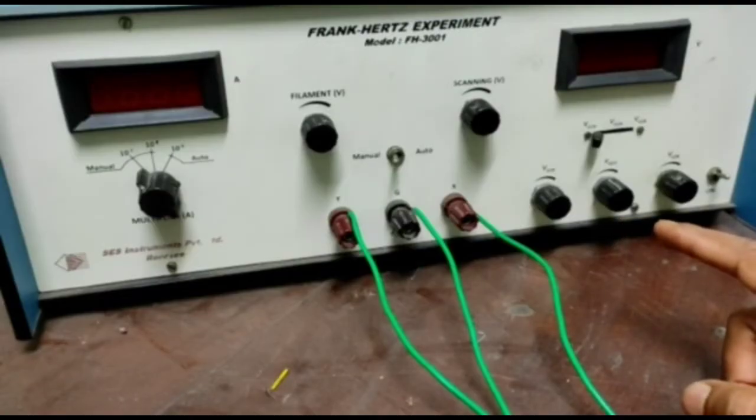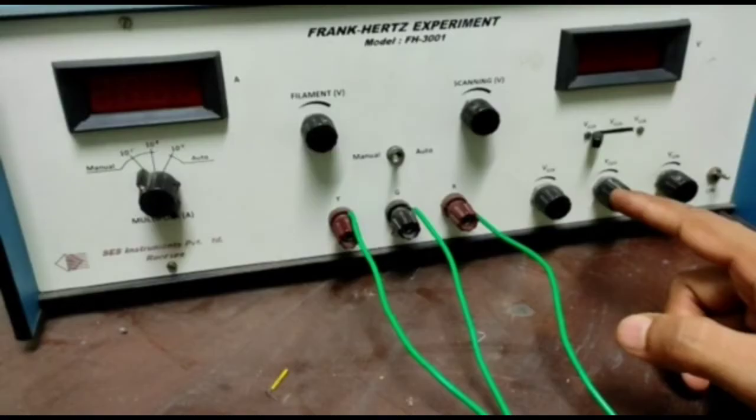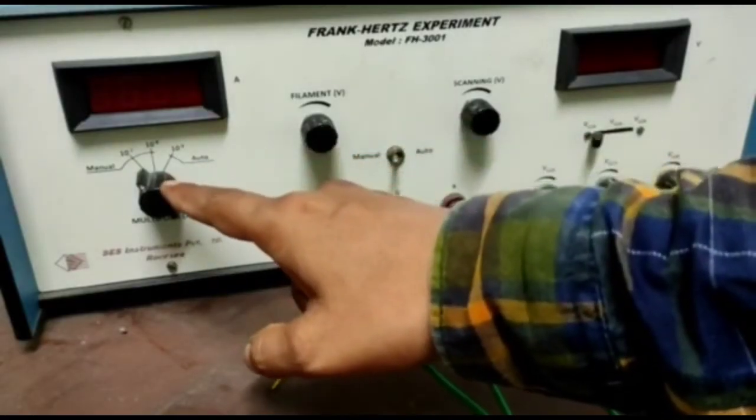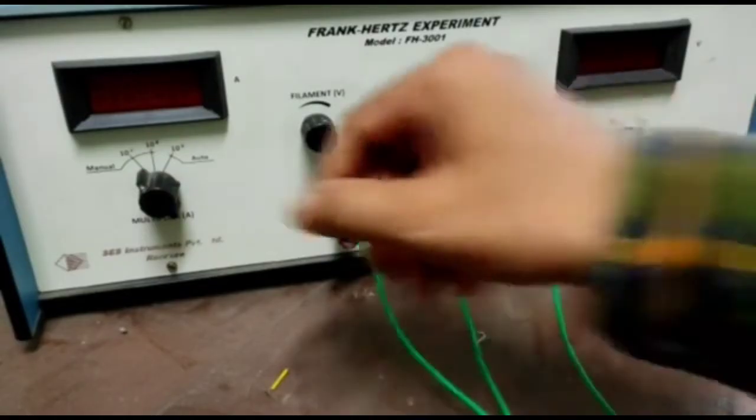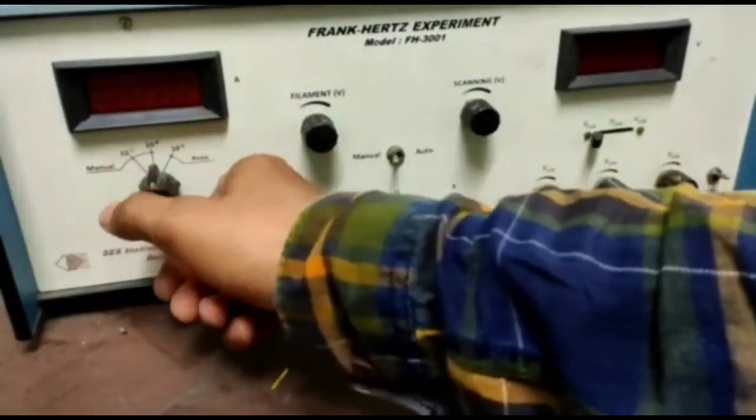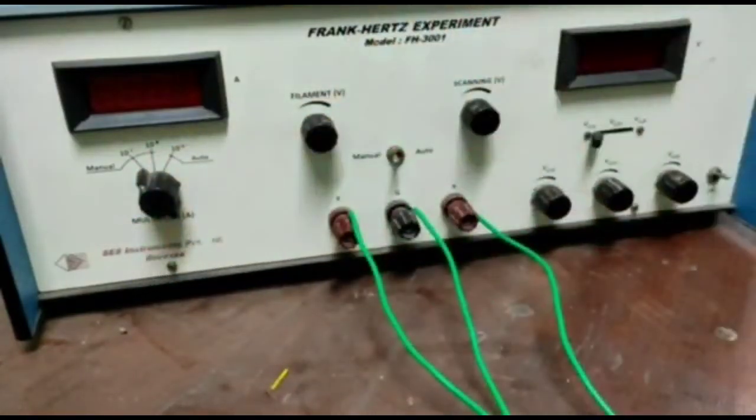Now before the power is switched on, make sure all the control knobs are at minimum position and current multiplier knob at 10 to the power minus 7 position. If you move this here, then it is 10 to the power minus 8 position. Now if you move it here, then it is 10 to the power minus 7 position.